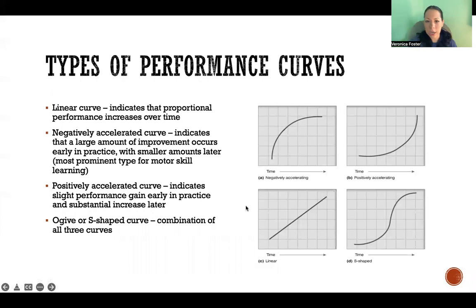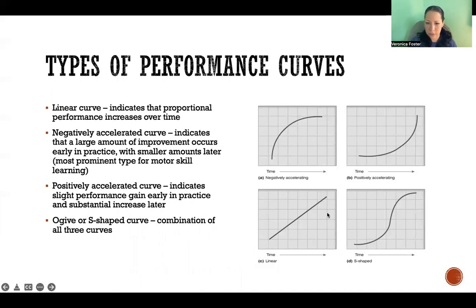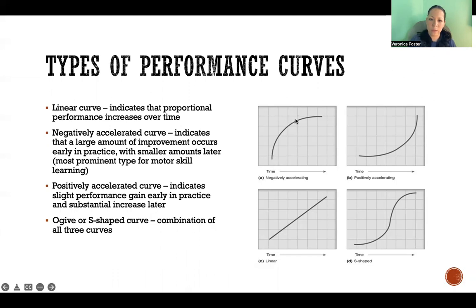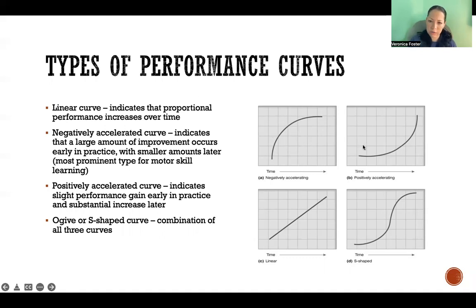There are four different types of performance curves we'll generally see. A linear curve indicates a proportional performance increase over time — that's the one in the bottom left. A negatively accelerated curve, shown in the top left, is where we have a lot of improvement very quickly and then smaller amounts of improvement later on. This is the most common type of curve seen in motor skill learning.